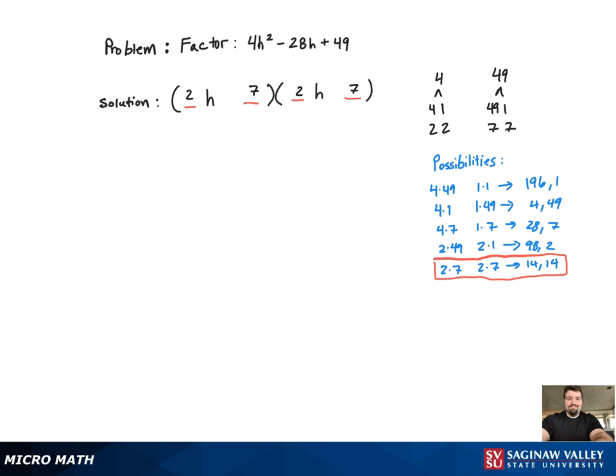So we just have to figure out the signs. Since there's a plus sign there, that means that it's either both plus or both minus. Because of that negative, they both need to be negative. So this here is the answer, 2h minus 7 squared.